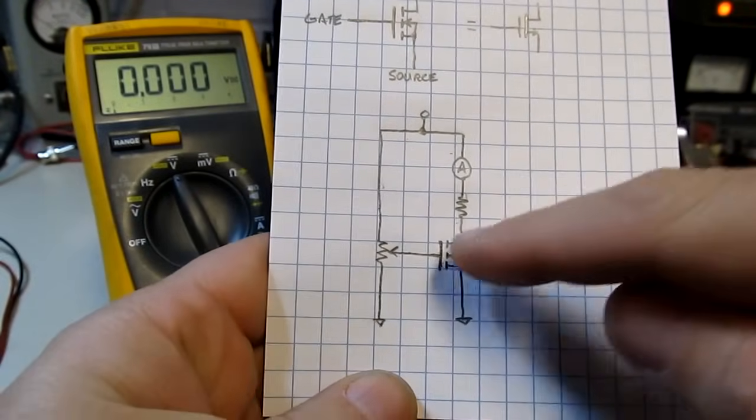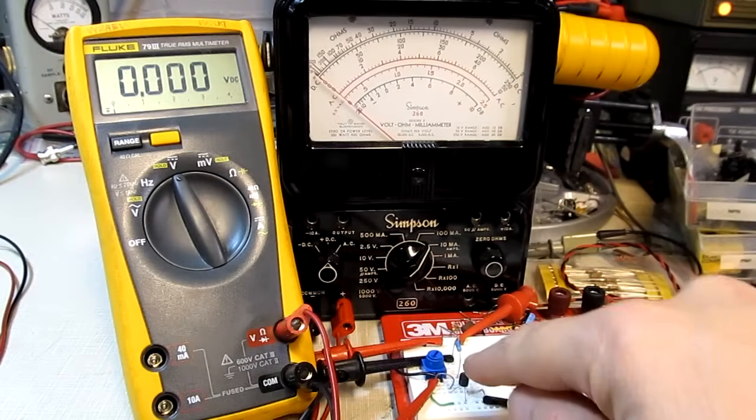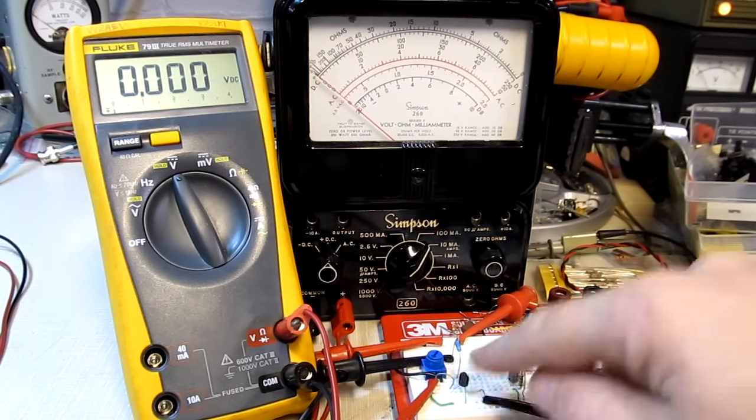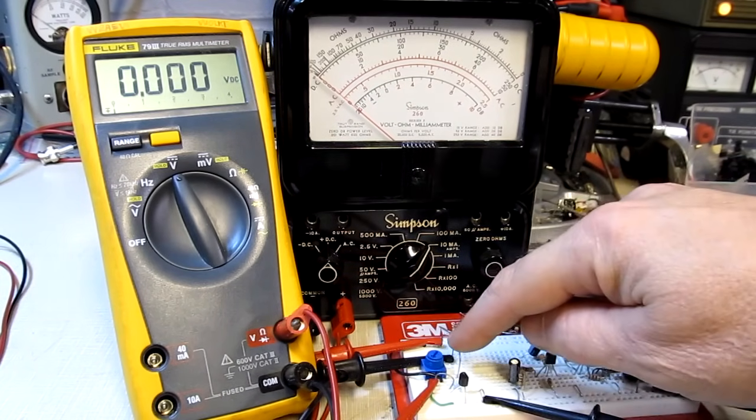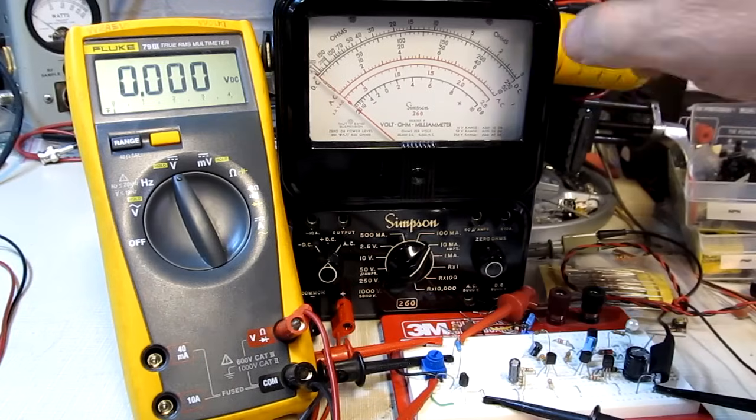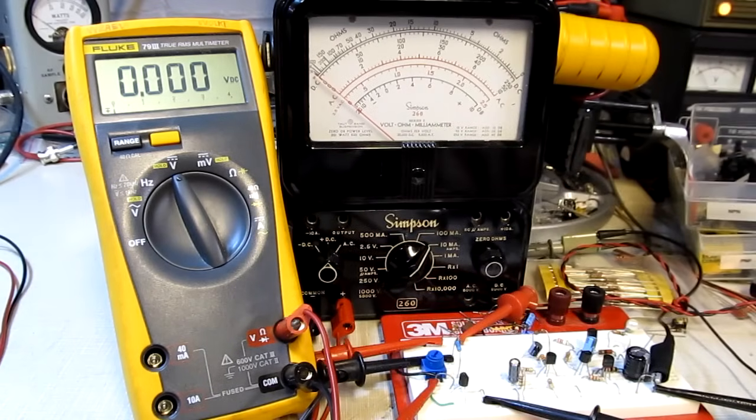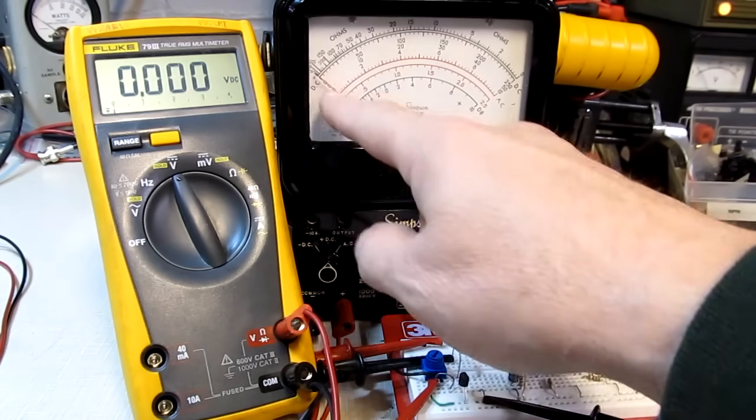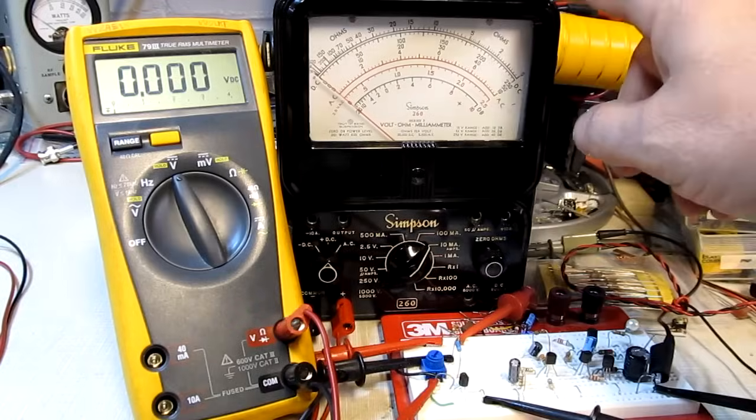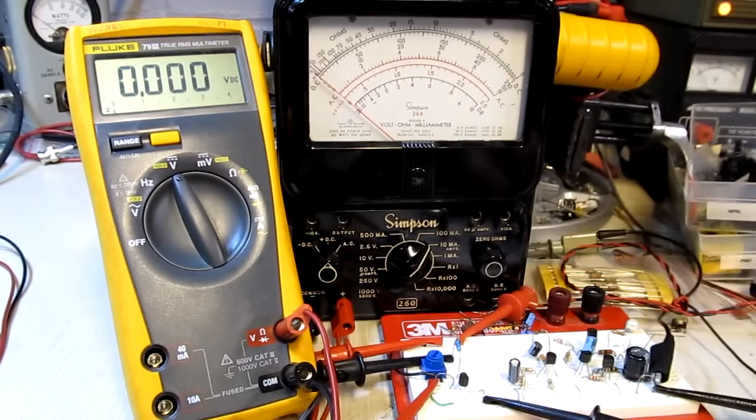I put this simple circuit together on the breadboard here. There's our FET under test right here. And the 1k current limiting resistor and the pot. The Simpson 260 is reading the drain current. And the DMM is reading the voltage on the gate. And we can see with zero volts on the gate, I've got no current flowing. The meter is set to a 10 milliamp full scale range.